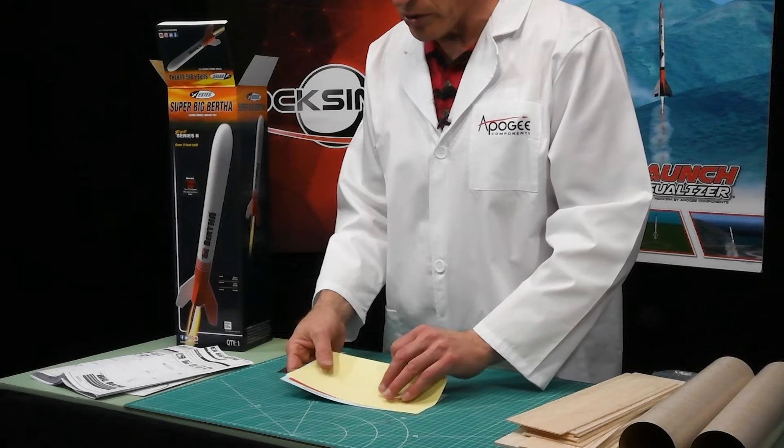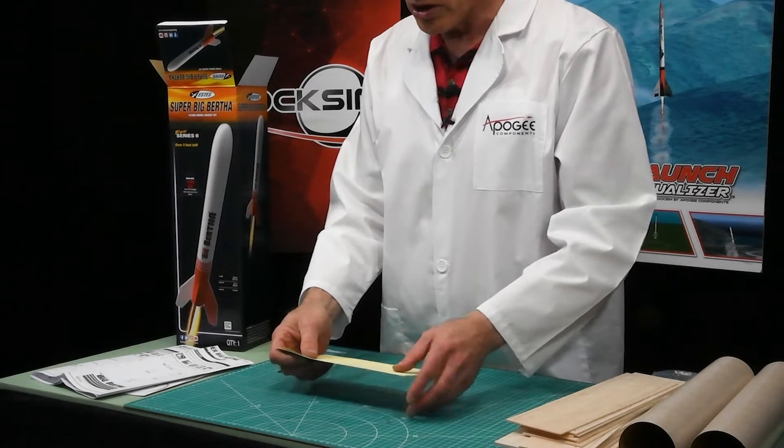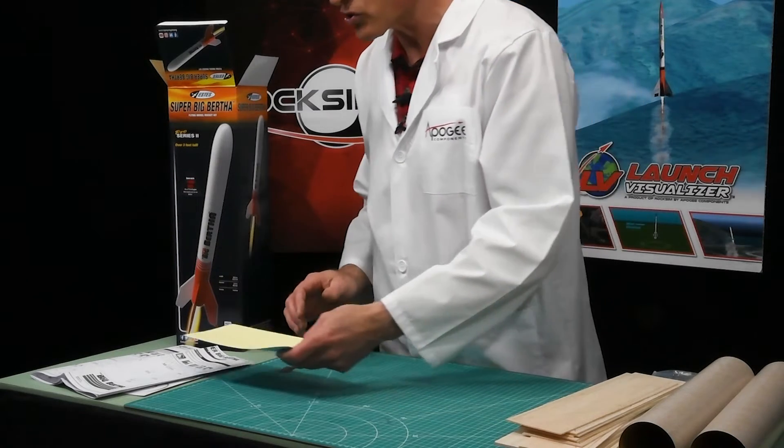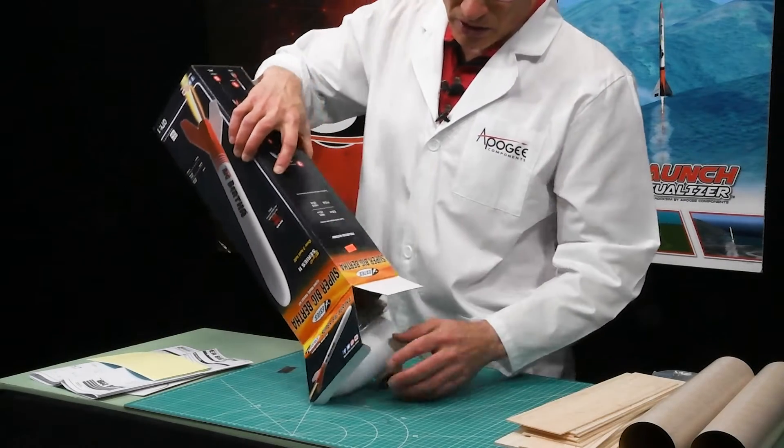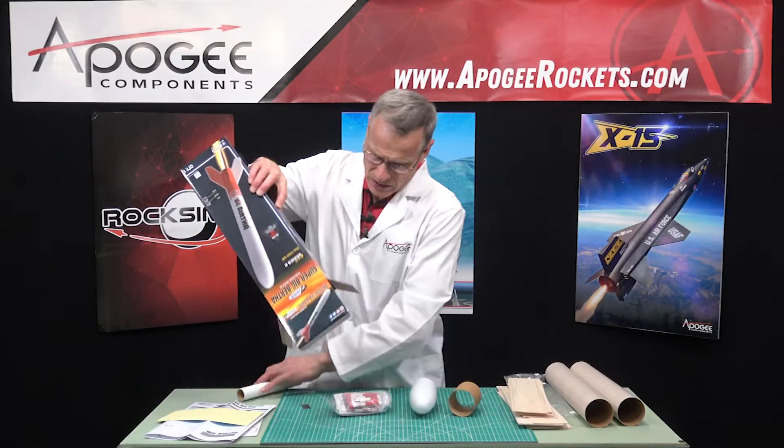The downside is that they are a little bit fragile. So you have to be very careful in using them. This little sheet of paper is a protectant just to cover that up so it doesn't get all scratched in the kit when it's shipping.